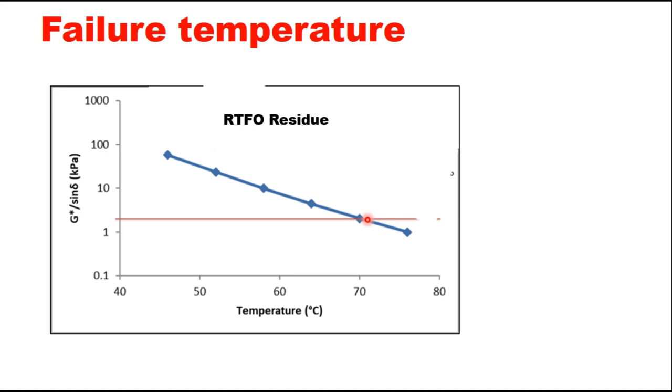As I told you in the beginning, these temperatures are bumped or raised in a step of 6. So accordingly, the highest temperature will be taken. Thank you very much for watching this video. I hope it is clear. In the next video, we will discuss how to determine the lower temperature of PG grading.